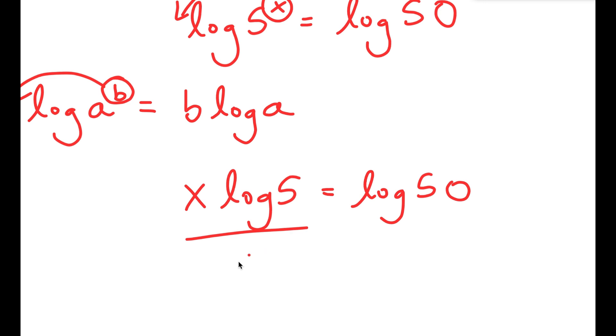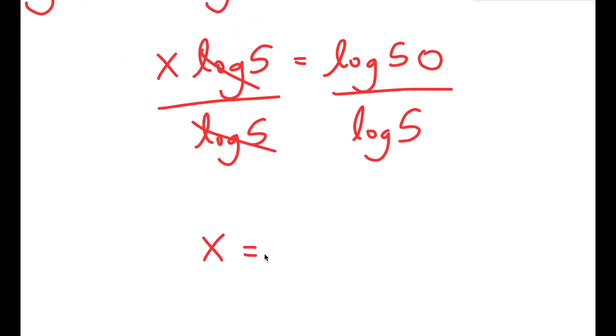Now from here, I'm going to divide both sides by log 5. So then these two cancel out, and I get x is equal to log 50 over log 5.